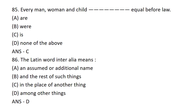The Latin word 'inter alia' means: Option A: An assumed or additional name. Option B: And the rest of such things. Option C: In the place of another thing. Option D: Among other things. Option D is the correct answer — AMONG OTHER THINGS.